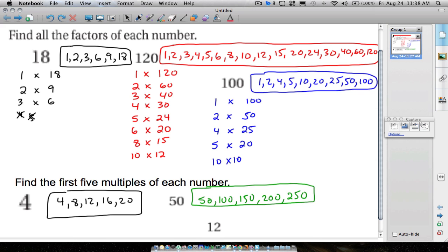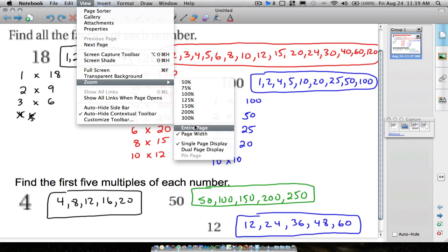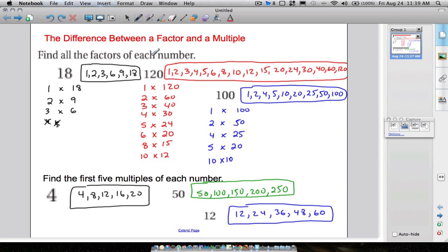And then our last one, the first five multiples of 12. Just a good time to practice your times tables: 12, 24, 36, 48, and 60. Those are your first five multiples of 12. These are not factors of 12. So again, just to emphasize the difference between a factor, which we did here, and a multiple down here. But that's it. Hope it helped.